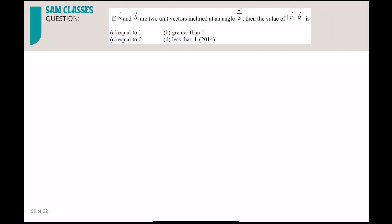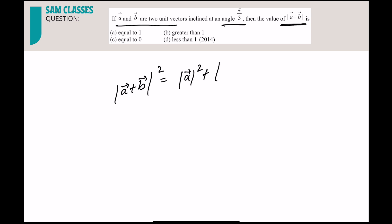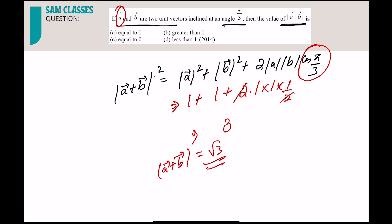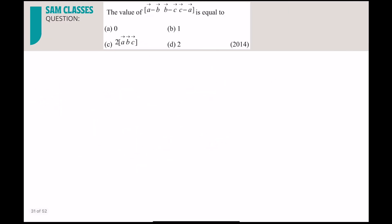Third question: a and b are two unit vectors inclined at angle π/3. Square |a + b|² = mod a² + mod b² + 2 mod a · mod b · cos(π/3) = 1 + 1 + 2(1)(1)(½) = 3. So mod(a + b) = √3 = 1.732, which is greater than 1.